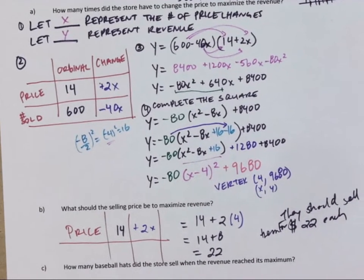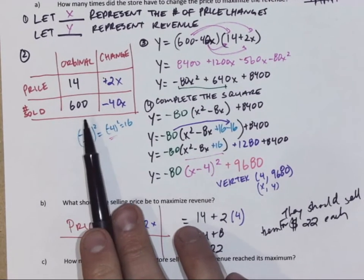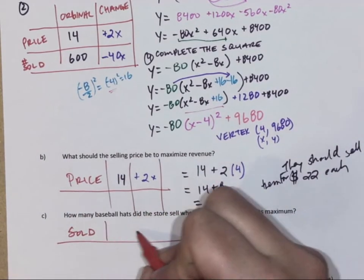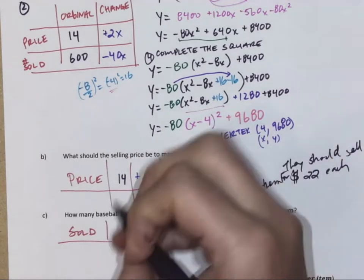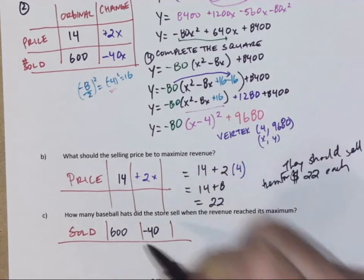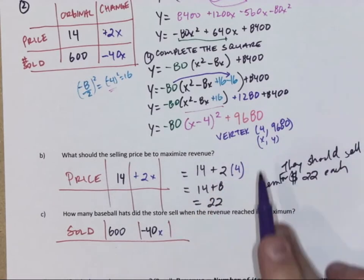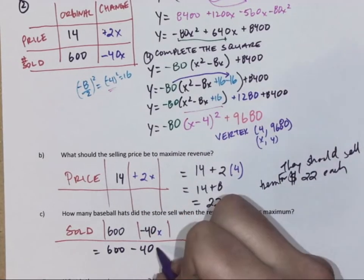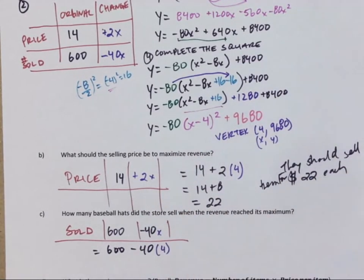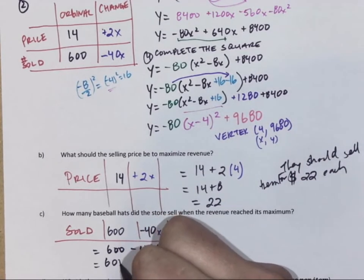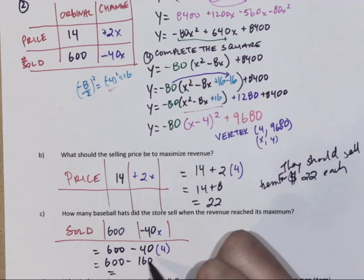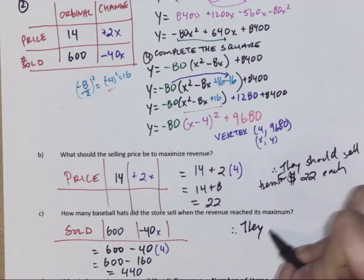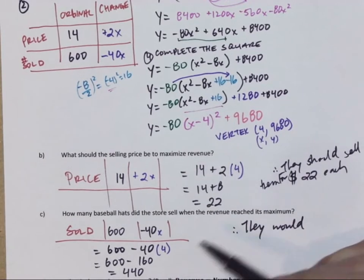How many baseball hats did the store sell? Well again, if we go up, the number sold, we start with six hundred, we're going to take away forty times X. So we're going to take our X of four, sub it in. So we know that they would sell four hundred forty.